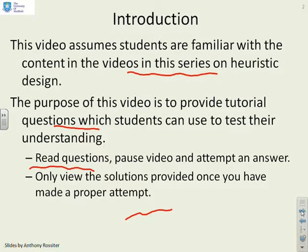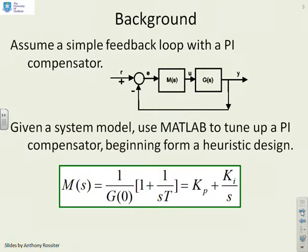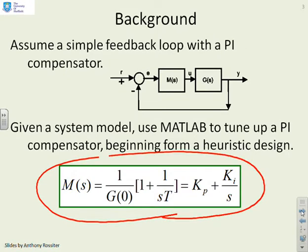By the way, we're using some particular MATLAB files here. If you really want those, you can contact the author. Just a bit of background, we're going to assume that we start from a PI design that's based on the heuristic guidance, which you'll see is 1 over G of 0 times 1 plus 1 over ST, where T is normally taken to be the open loop time constant.